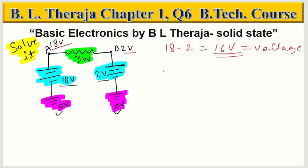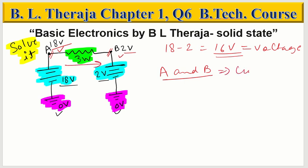The question asks us to show the current direction in the A and B section. A and B section is this. The simple thing is that point A is at higher potential and point B is at lower potential. So what is the current direction? It will be A to B.